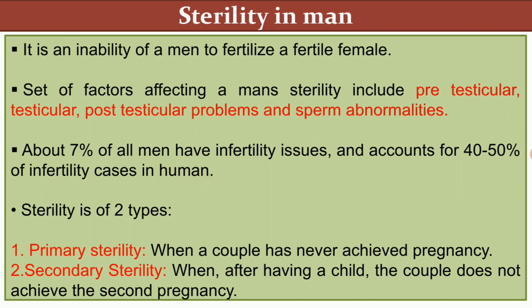Sterility in men is mainly of two types: primary sterility and secondary sterility. Primary sterility means when a couple has never achieved pregnancy in their lifetime or reproductive period. Secondary sterility is when, after having one child, the couple does not achieve a second pregnancy — there is an absence of a second pregnancy though they already have one child.